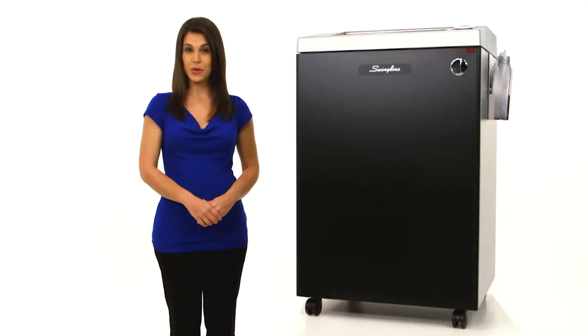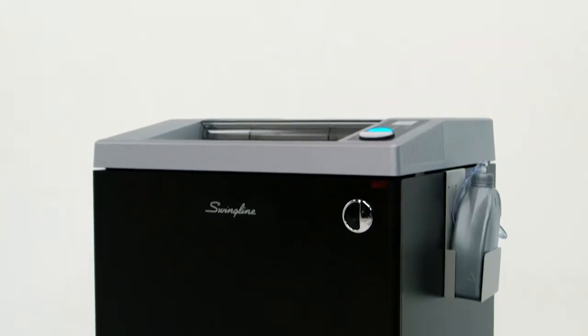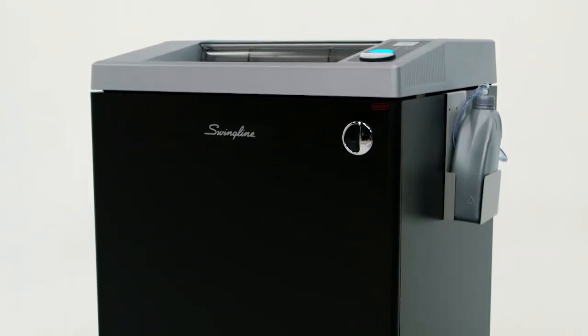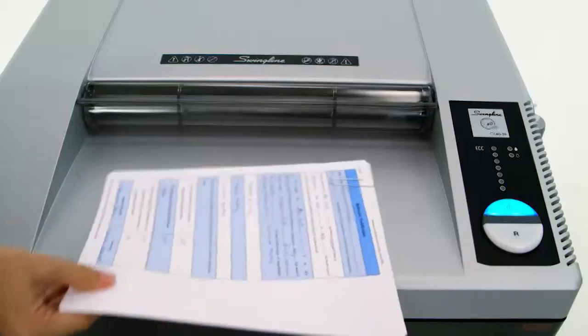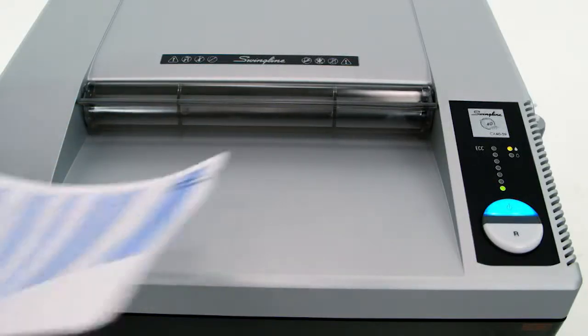Ideal for basic security needs like mail and documents with personally identifiable information, this Cross-Cut Security Level P3 machine shreds at a speed of 30 feet per minute. Use the 16-inch extra-wide paper entry to feed documents sideways for even faster shred speed.